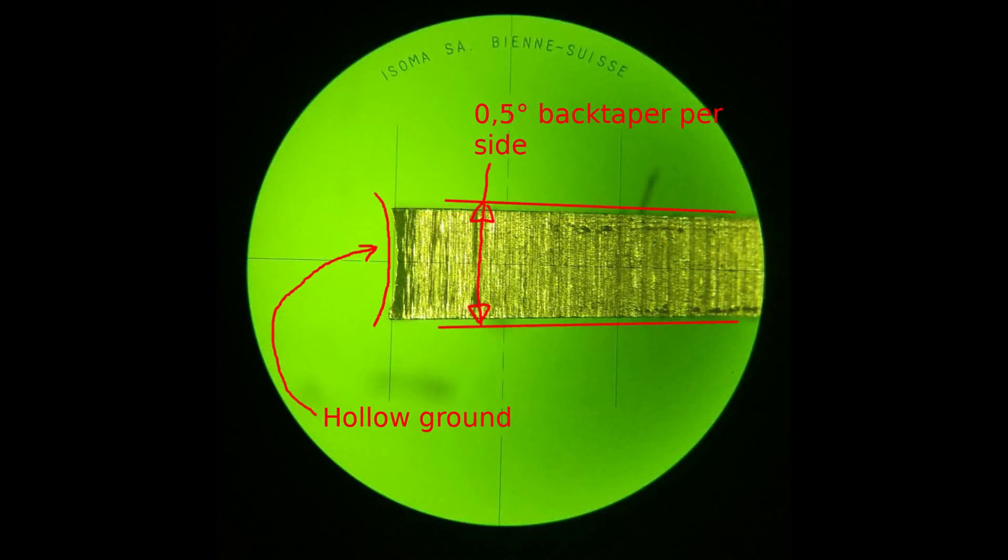Here is a microscope view of the broach. You can see the hollow grind on the front and the kind of rough surface of the hollow ground because the diamond grinding tool I was using has a relatively coarse grit size.